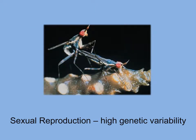In sexual reproduction, two parents contribute genetic information in the form of gametes, or sex cells. These flies are mating so their gametes can get together. The gametes fuse, and an offspring is produced from the fertilized egg. Therefore, the resulting offspring has a unique genetic structure.